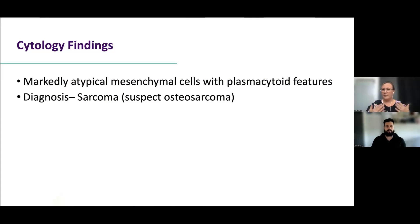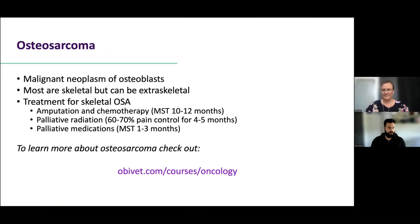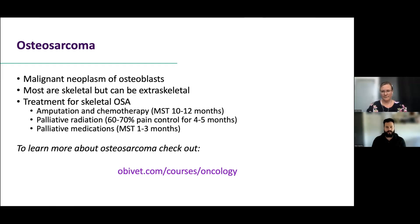We have a markedly atypical mesenchymal population with subtle plasmacytoid features. We can make a confident diagnosis of sarcoma on cytology and strongly suspect osteosarcoma. The reason I don't say 100% is because there are overlapping cytologic features between different sarcoma types, so histopathology or special stains are needed to confirm. That pink osteoid matrix is a really neat feature — I'd always seen it mentioned on cytology reports but now you can see what it actually looks like.